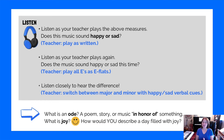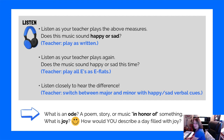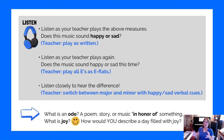Listen closely to hear the difference as the teacher switches between major and minor with happy and sad verbal cues. It can be as simple as you asking 'is this happy?' so they start hearing the minor. You want to go back and forth between the two to really contrast that sound so the student can internalize that sense of major and minor.